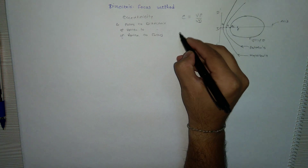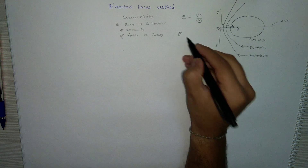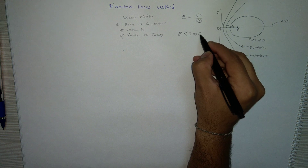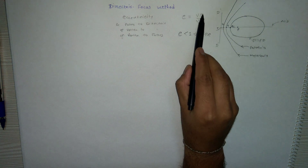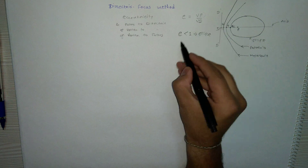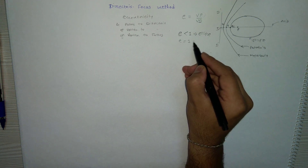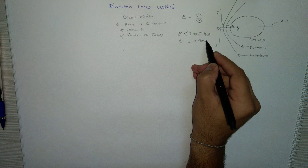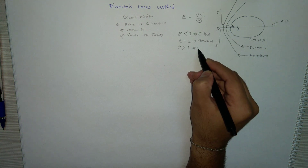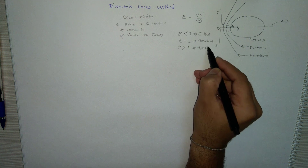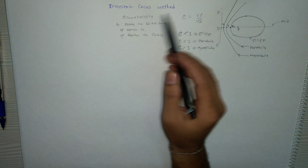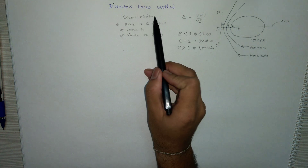Eccentricity has a particular value for each curve. For an ellipse, E is always less than one because Vf is always less than Vd. For a parabola, E equals one. For a hyperbola, E is always greater than one.